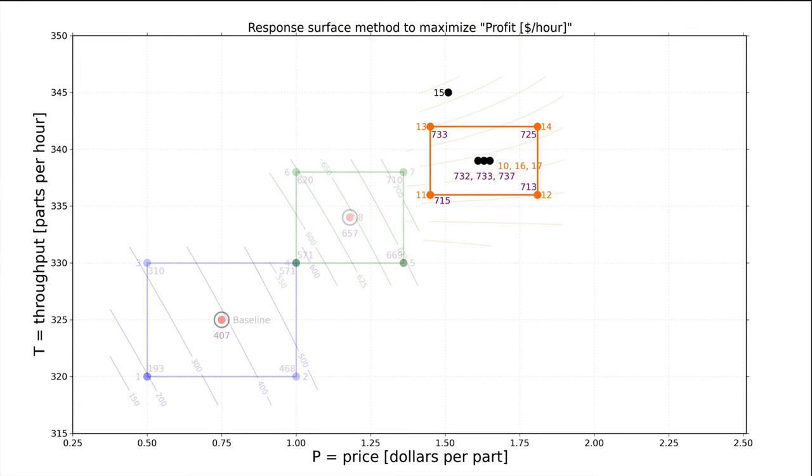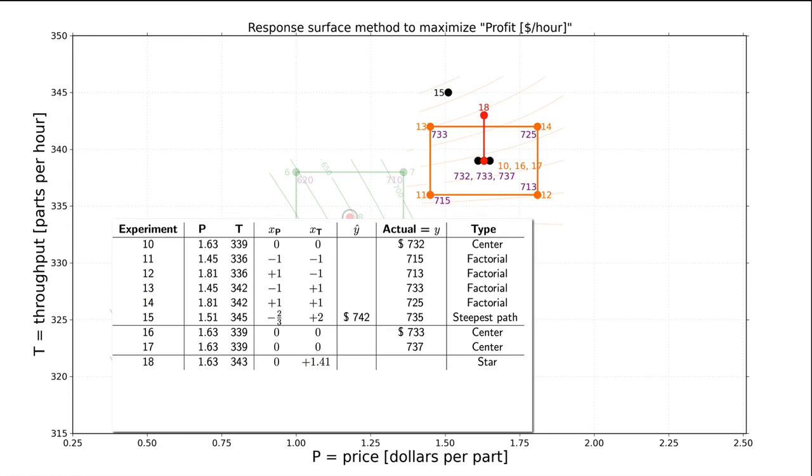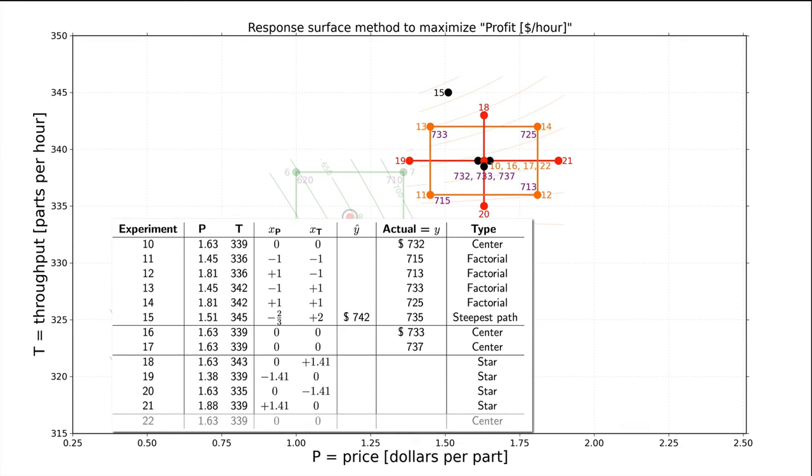Let's go do this. The first star point is run number 18, at a value of plus alpha for factor t in coded units, and a value of zero in factor p. Let's add that to the table, and also calculate the real world units for it in the usual way. So that's 343 parts per hour and a sales price of $1.63. You can go practice reproducing the other three star points. And let's go add one final centre point experiment, number 22, so that we have a total of four centre points. Now we go run these experiments in random order, of course, and report the outcome values here in standard order. Notice firstly that the centre point 22 is similar to the prior values, indicating that the system is still stable and reproducible.